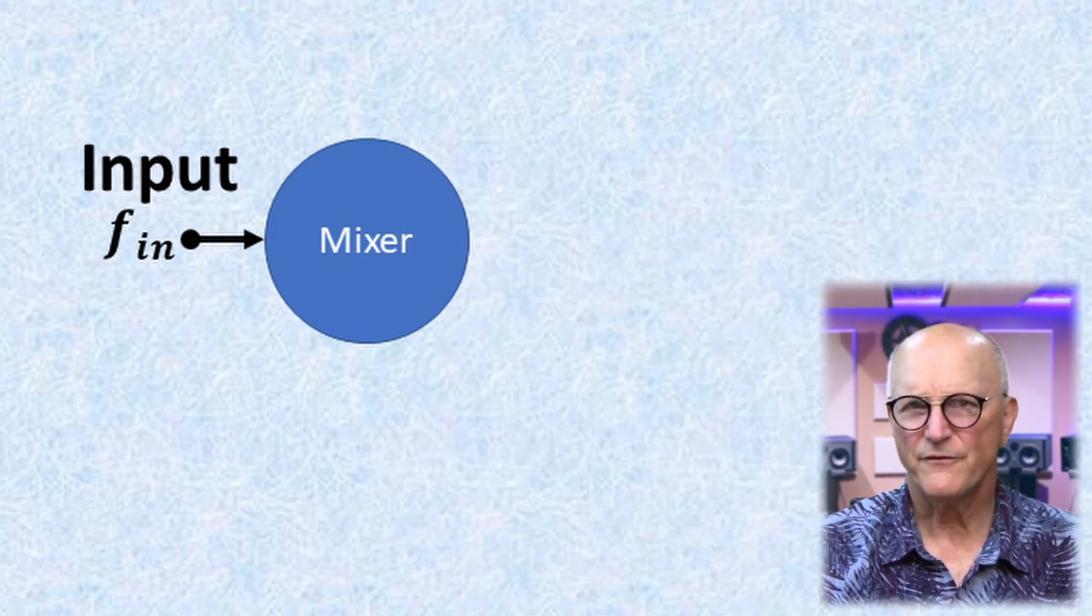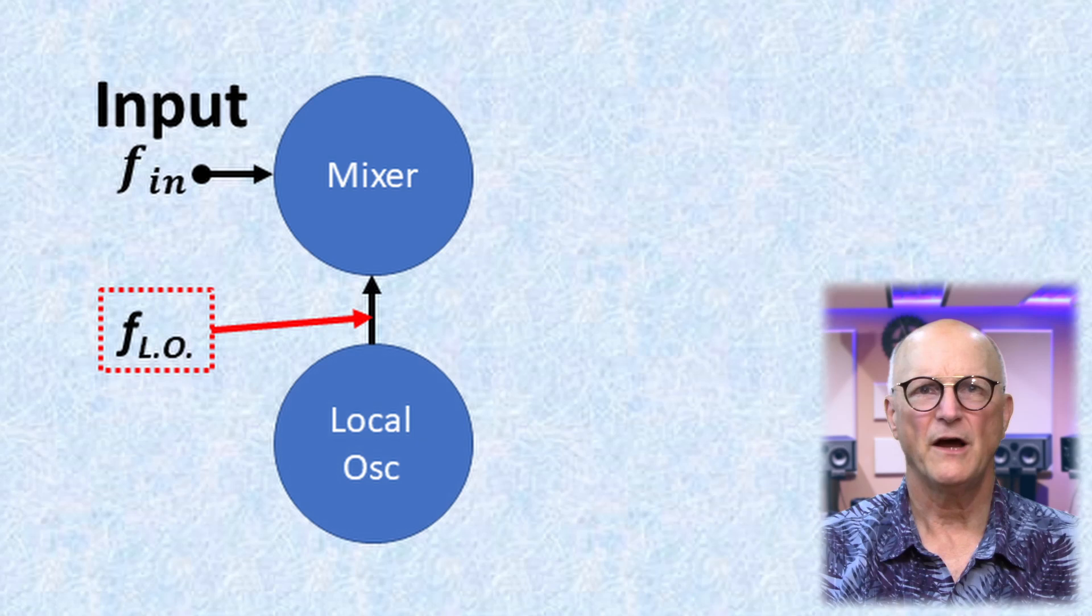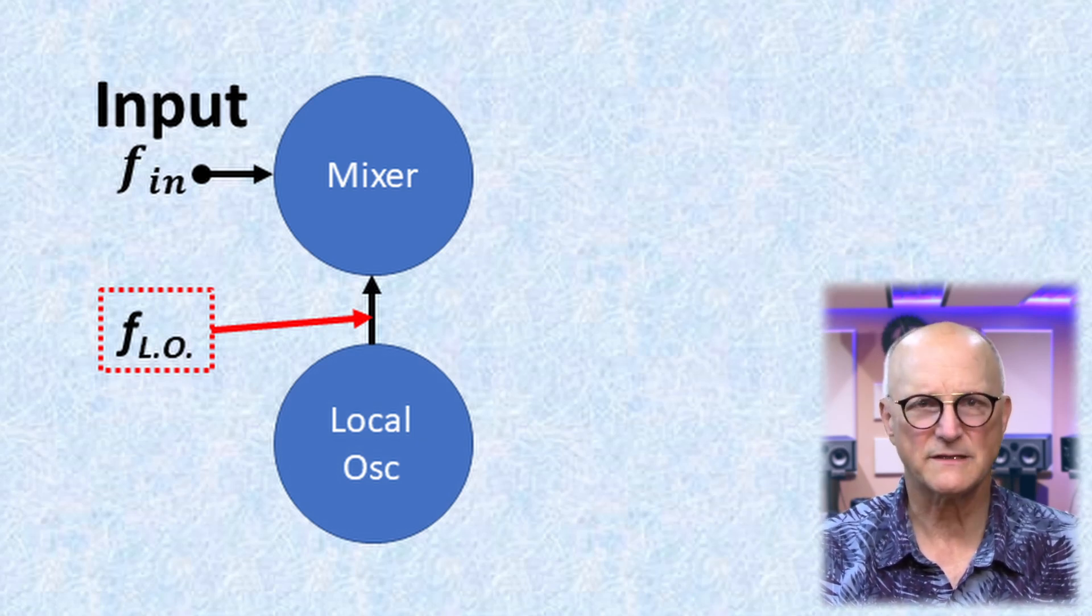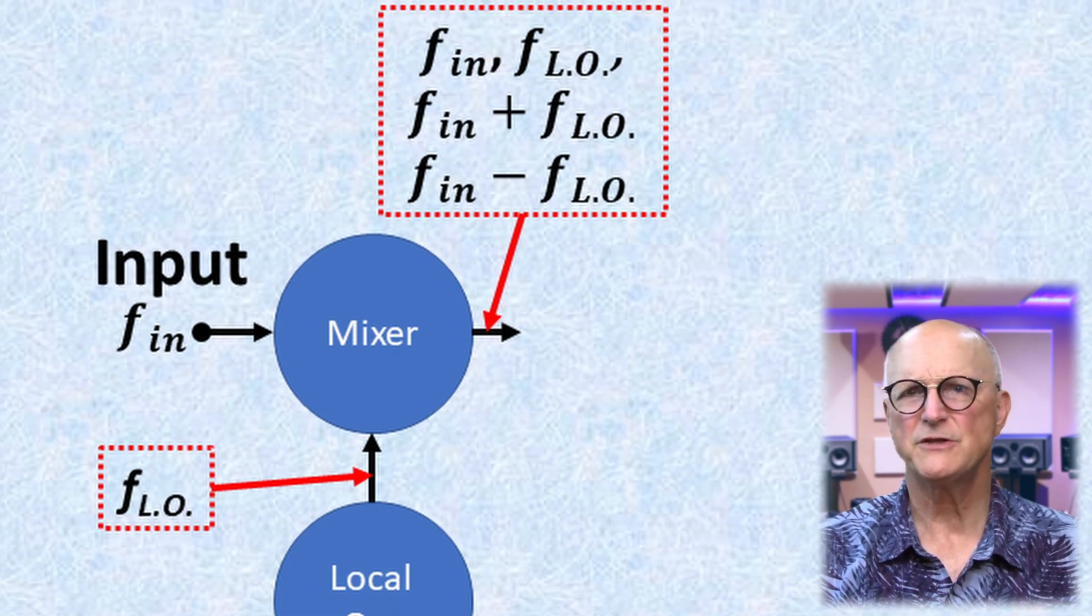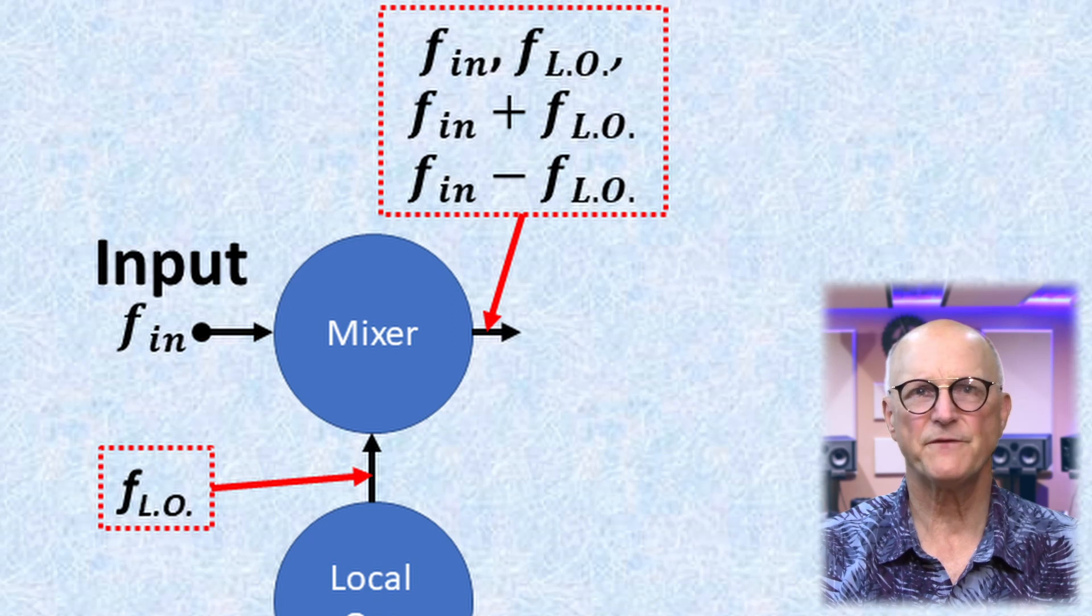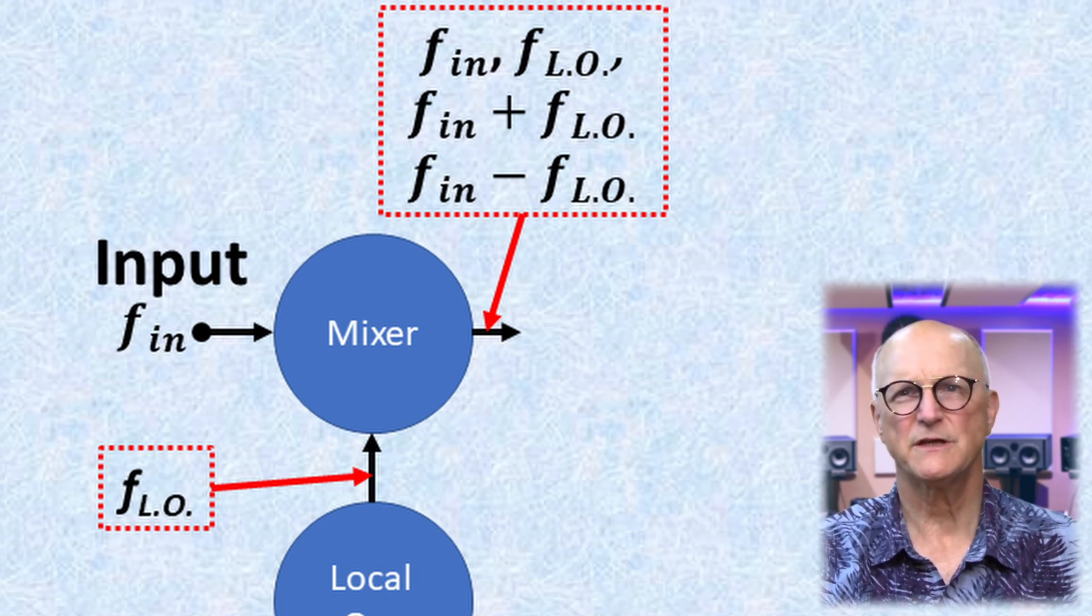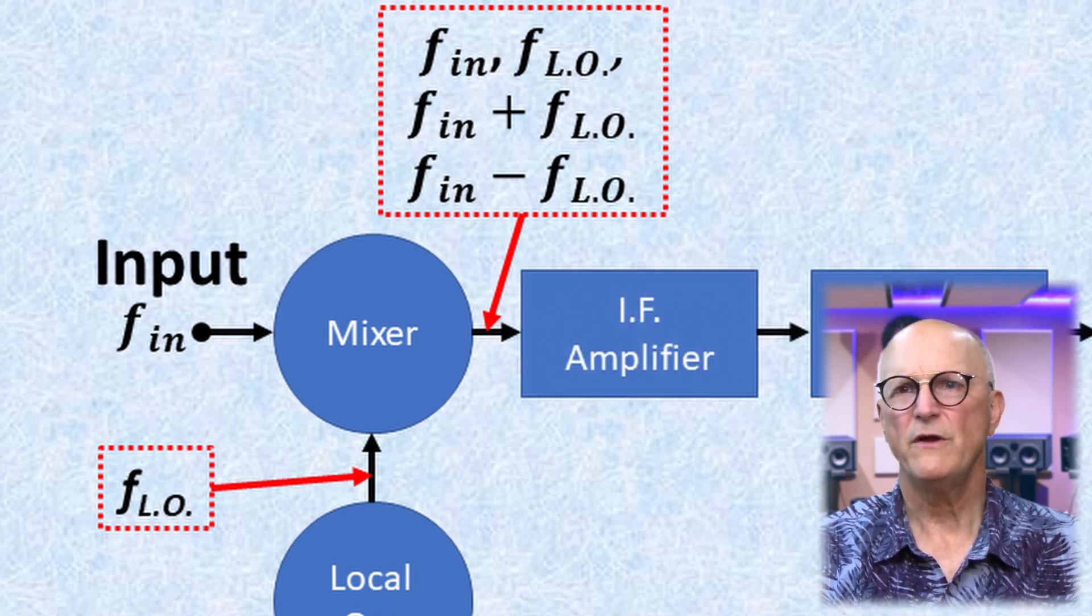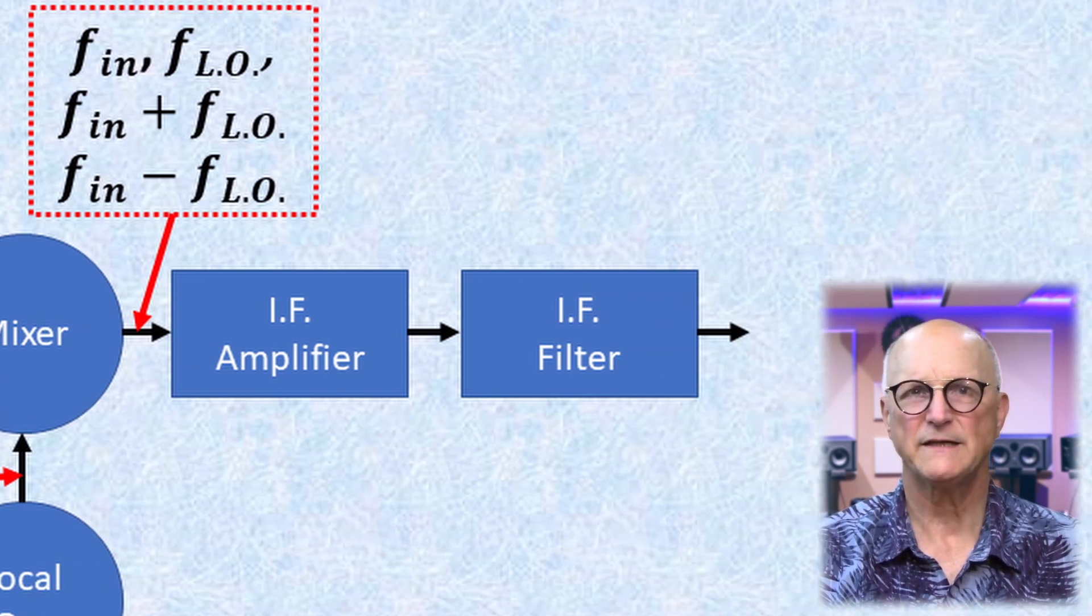We have the RF input stage which feeds an RF mixer. The other input to the RF mixer is the local oscillator. The output of the RF mixer is a combination of frequencies, one of which coincides with the specific desired intermediate frequency or IF. To make sure that we're only paying attention to the desired IF, we follow the IF amplifier with an IF band-pass filter.